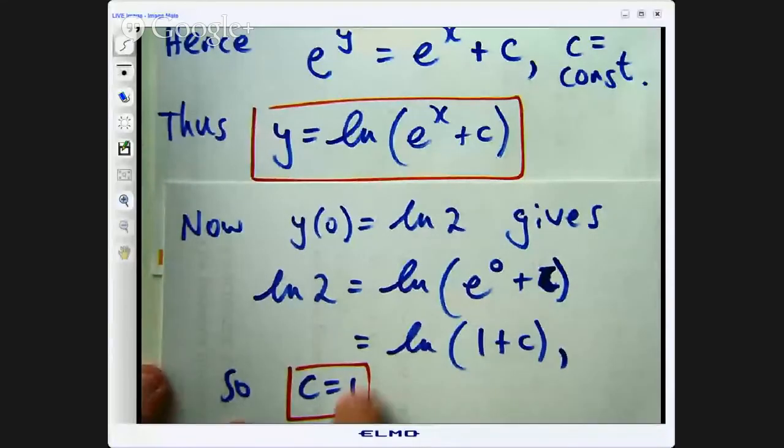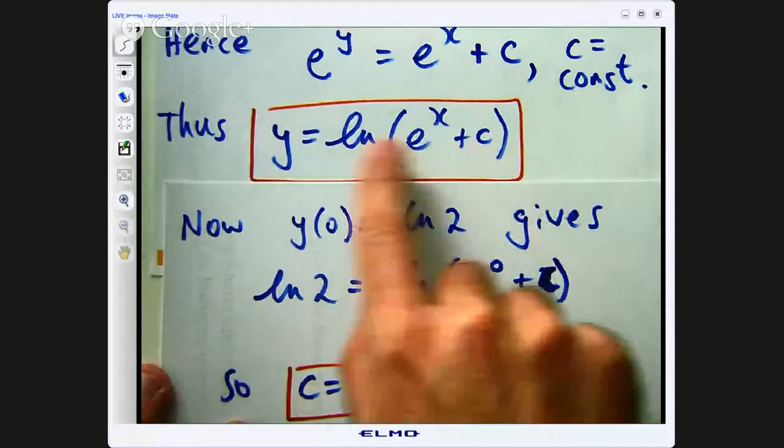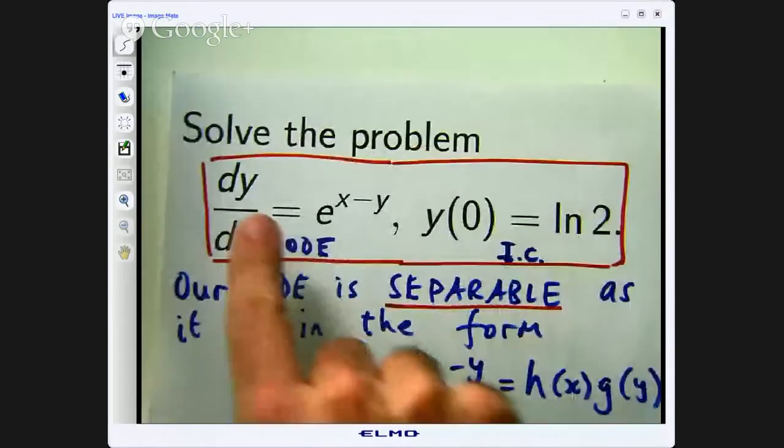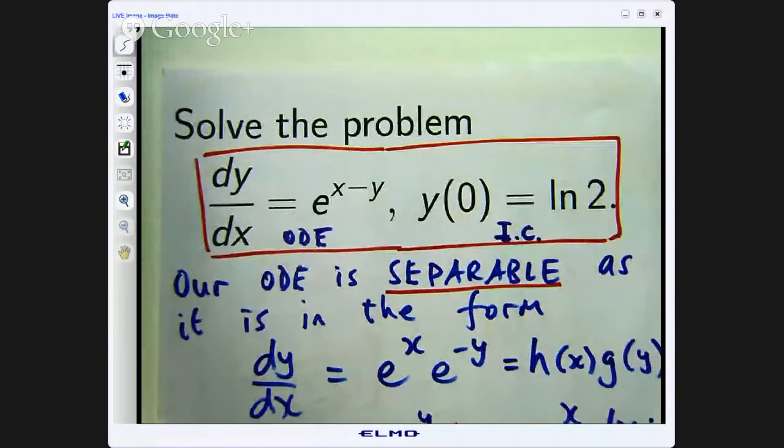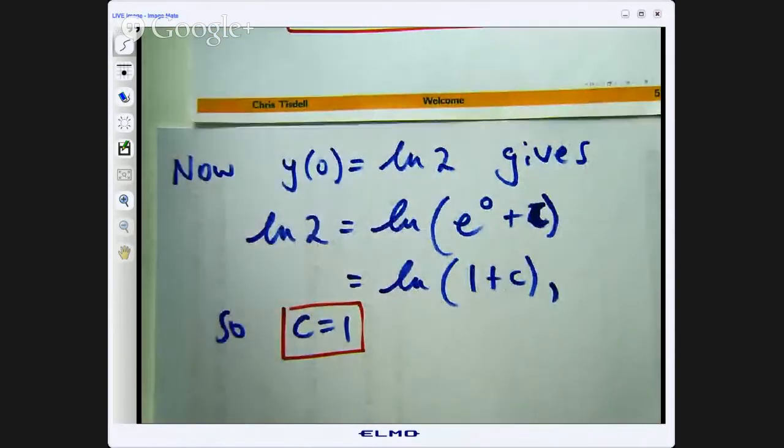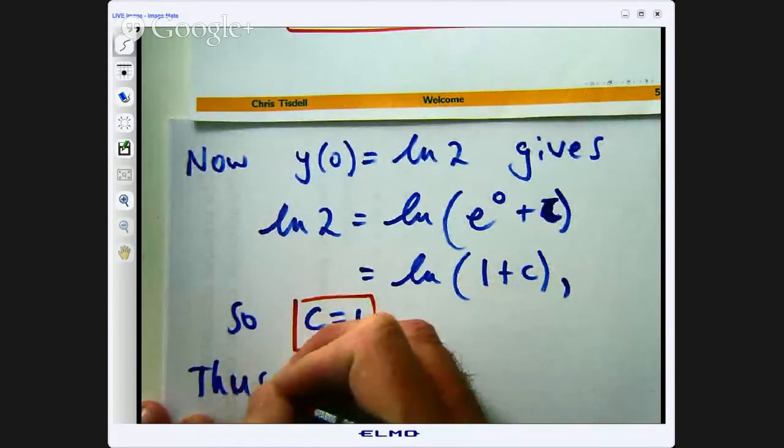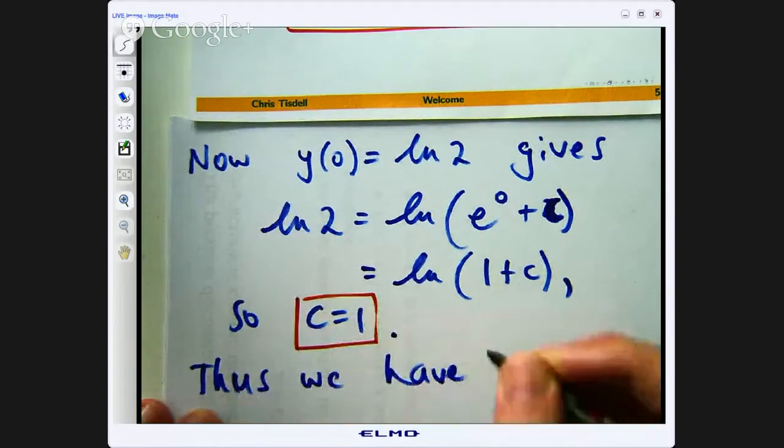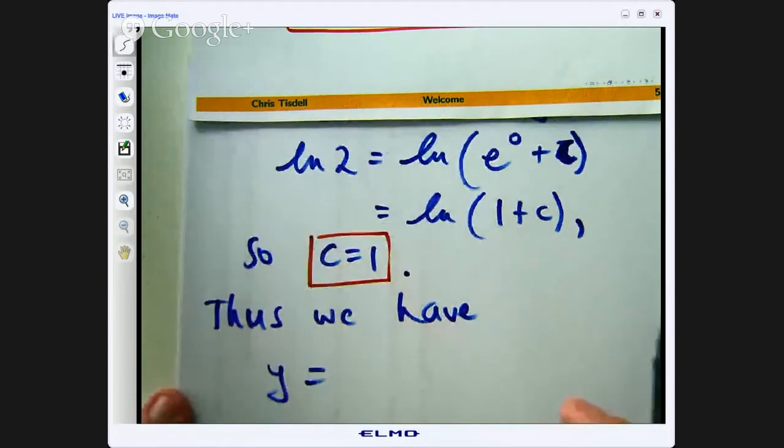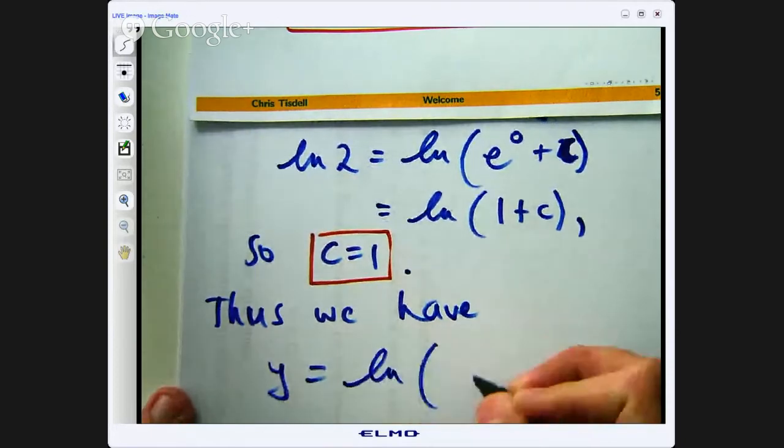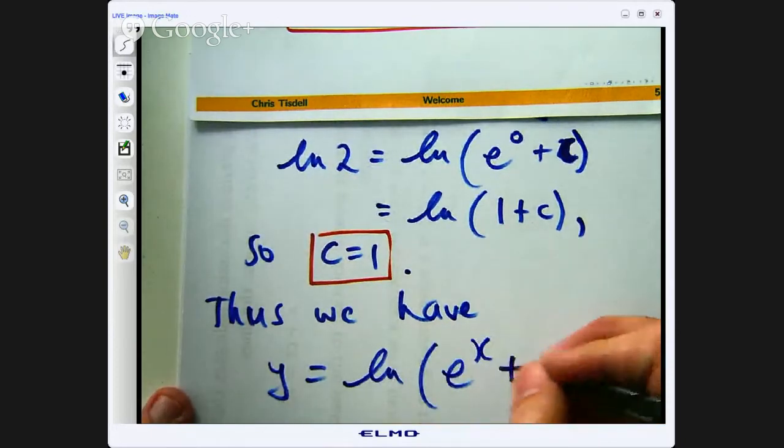So we have now formed a general solution which involves c and now we have refined it through the initial condition to find a particular value for c. In this case c was equal to 1. So now what we can do is replace c up there with 1 and then we have got a solution to our original problem. Thus we have y equals the natural log of e to the x plus 1.